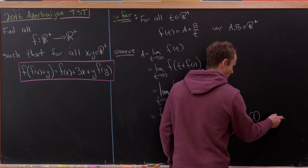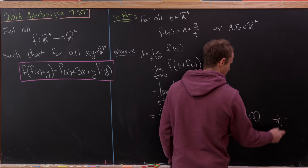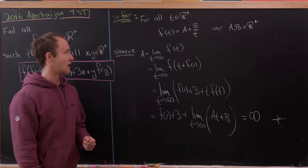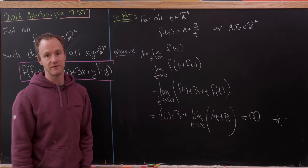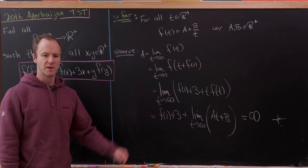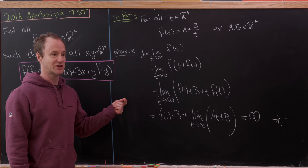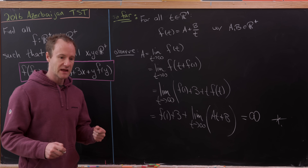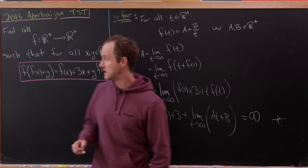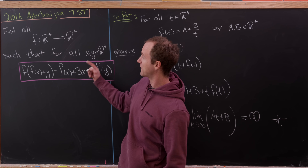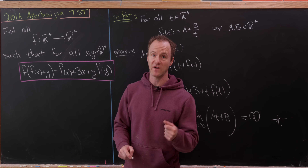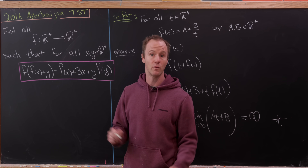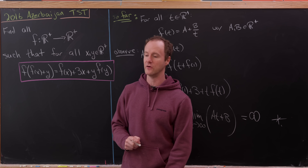But infinity is not a positive real number, so a cannot be a positive real number — yet we established it must be. This is a contradiction. We've shown the function must have the form a + b/t, but that form leads to a contradiction. Therefore, the answer to 'find all functions satisfying this condition' is: there are no such functions. And that's a good place to stop.